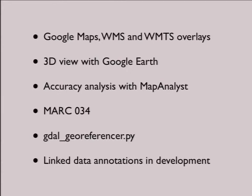What's the output? Users add ground control points — but what happens next? Basically, anything you want. We provide overlays over Google Maps, WMS, and WMTS. You can view the result in Google Earth or download the KML, which is usually what's really attractive to users. Reviewers can use MapAnalyst for accuracy analysis when verifying the work. We have a web interface to MapAnalyst that runs on our server and responds over HTTP, so we can show distortion grids and similar analysis.